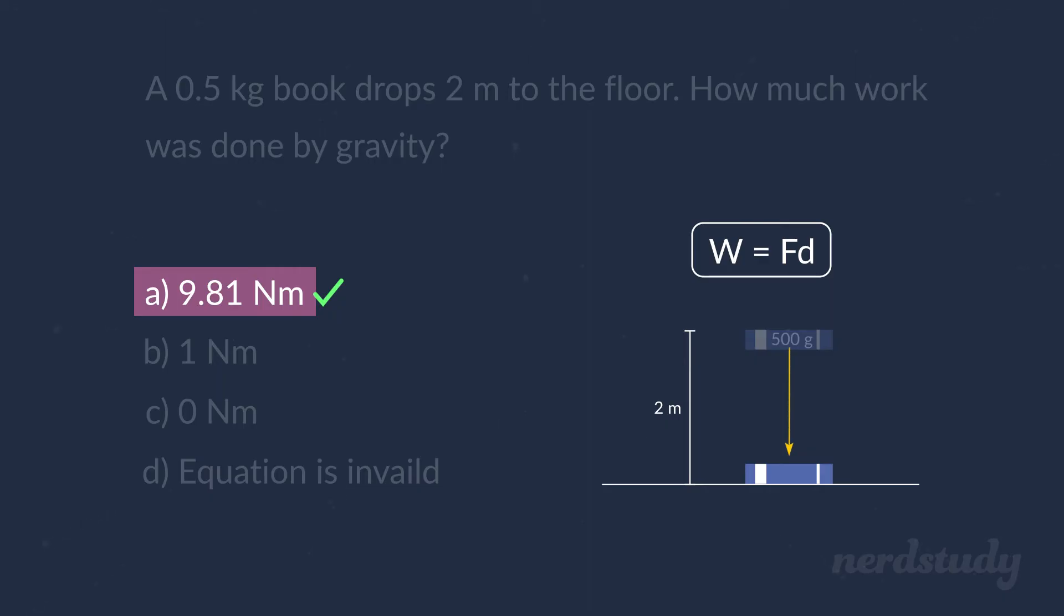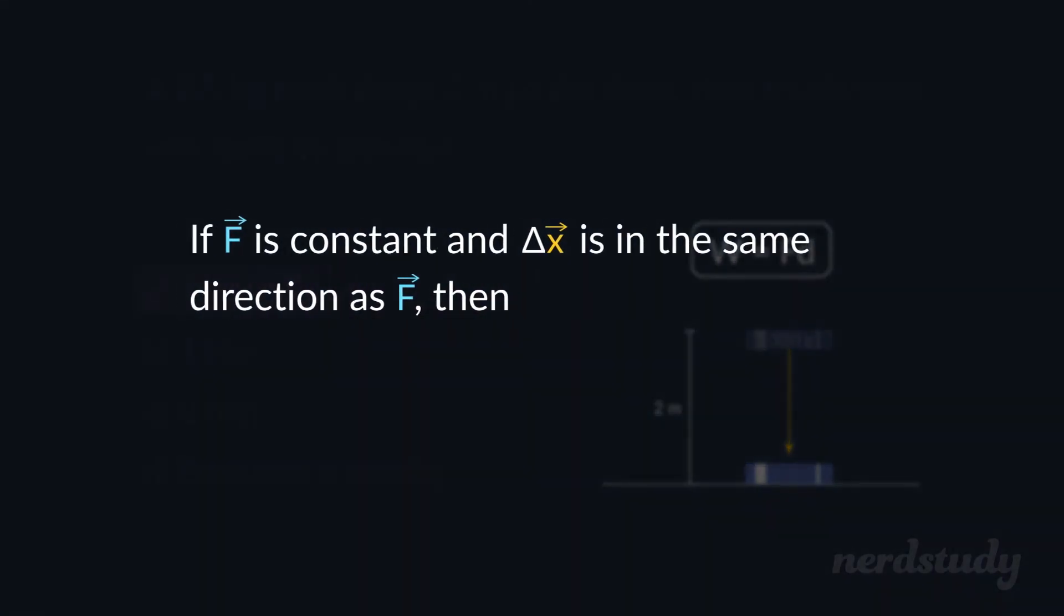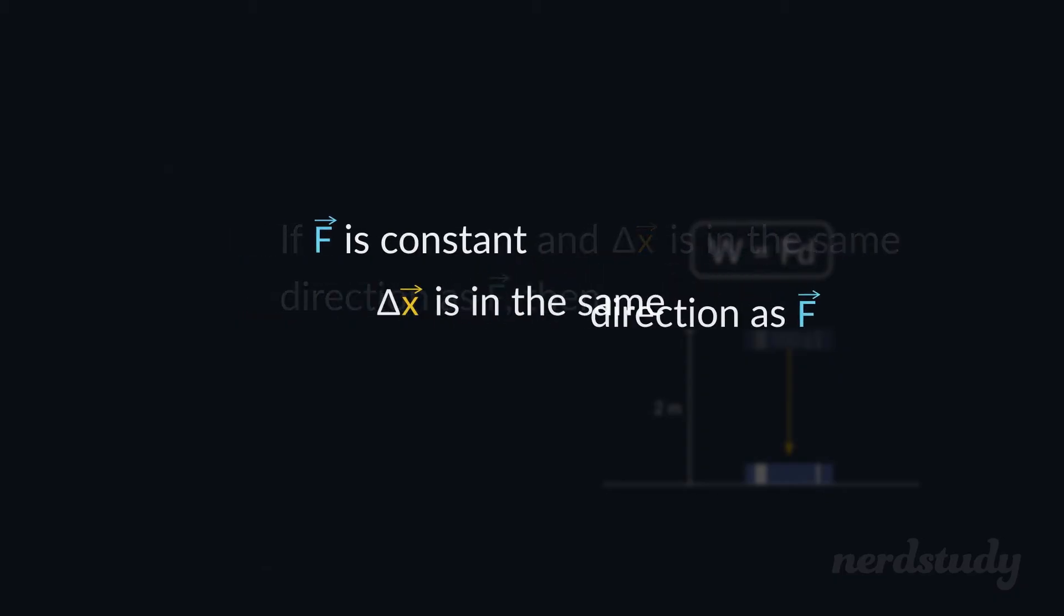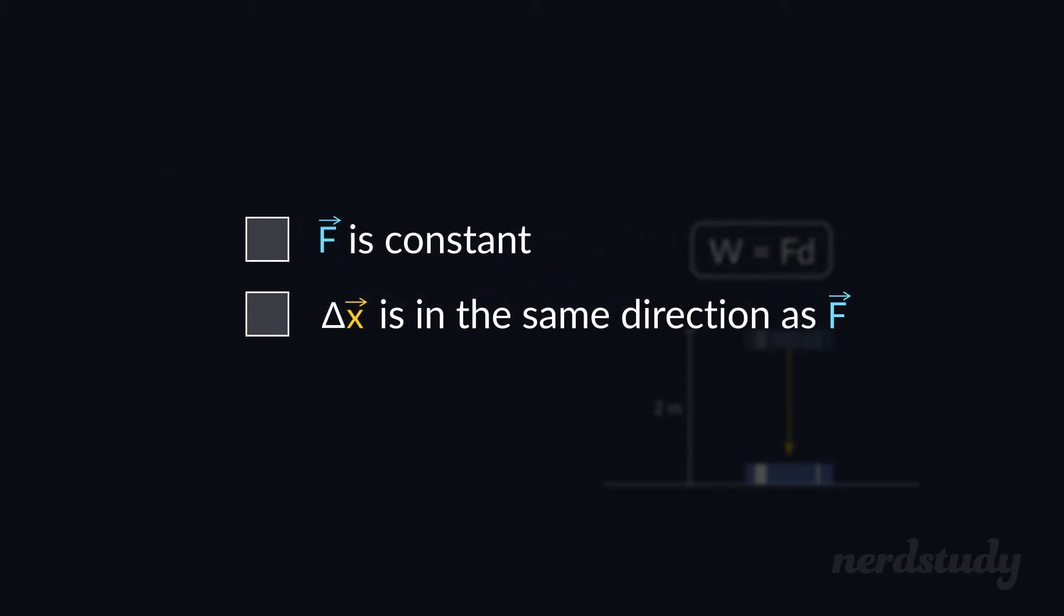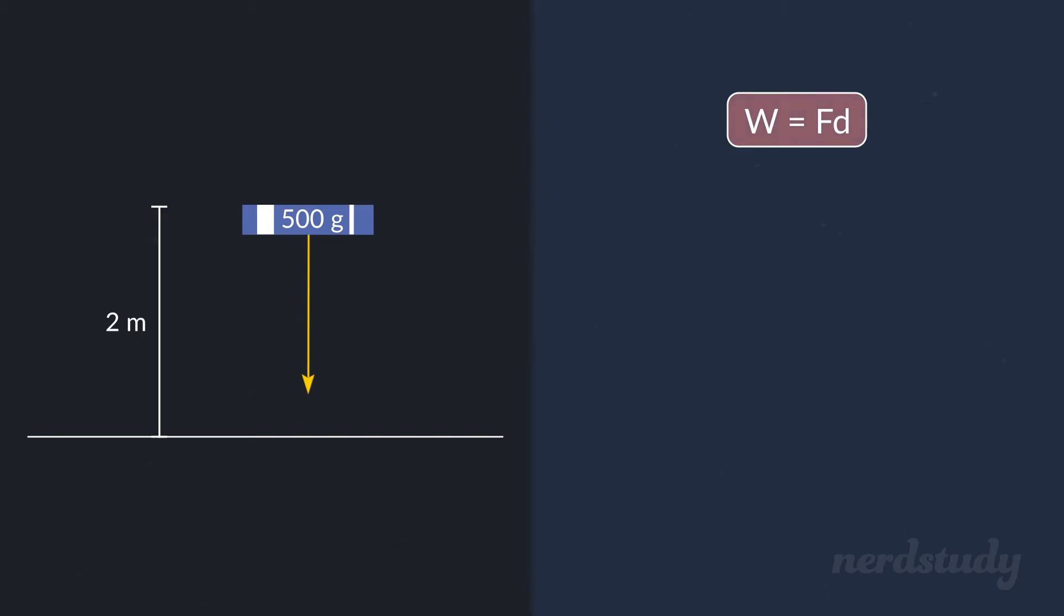Well, before we do anything, we need to check whether we're allowed to use the equation. There are two conditions that have to be fulfilled. First, we have to check, is the force constant? Well, gravity is constant near the Earth's surface, so that checks out. And does the force point in the same direction as the displacement? Well, the book falls downward, in the same direction as gravity, so this is fulfilled too. So we're allowed to use our new formula, W equals F times D.